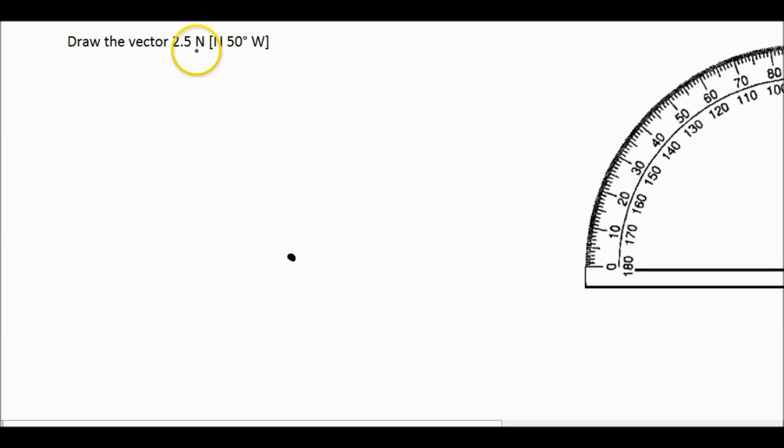For example, 2.5 Newtons isn't really a thing you can draw, but you can represent it by saying 1 centimeter is equal to 1 newton. So that's the scale we're going to use.